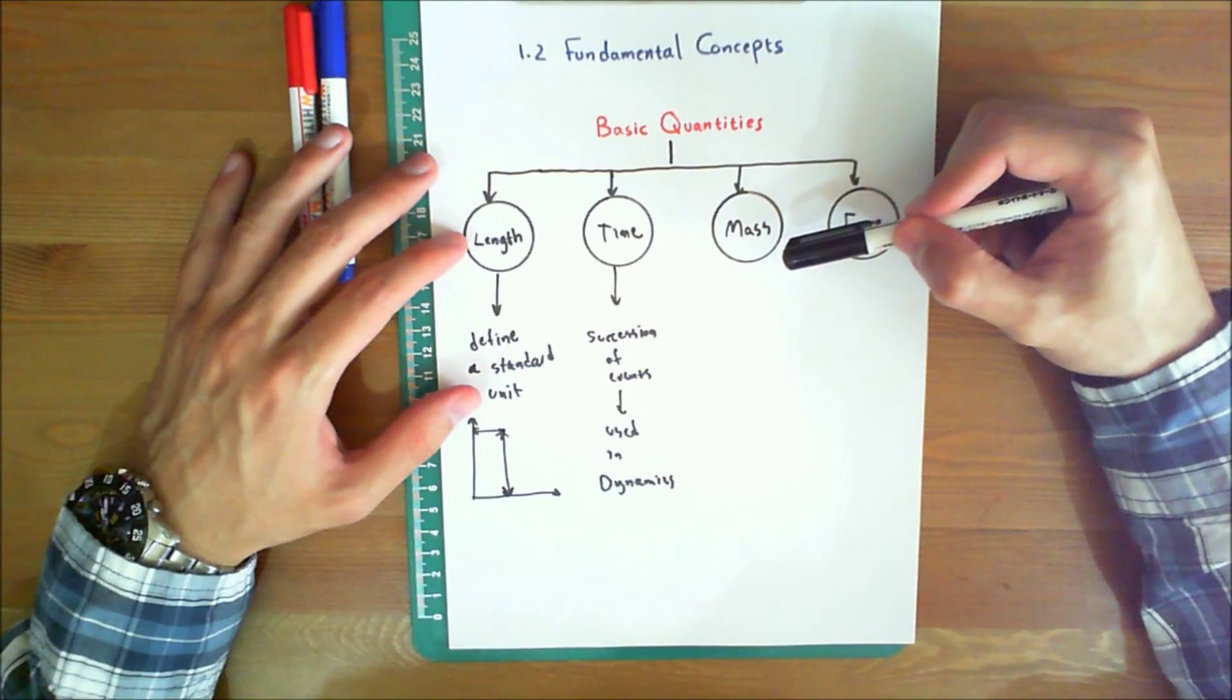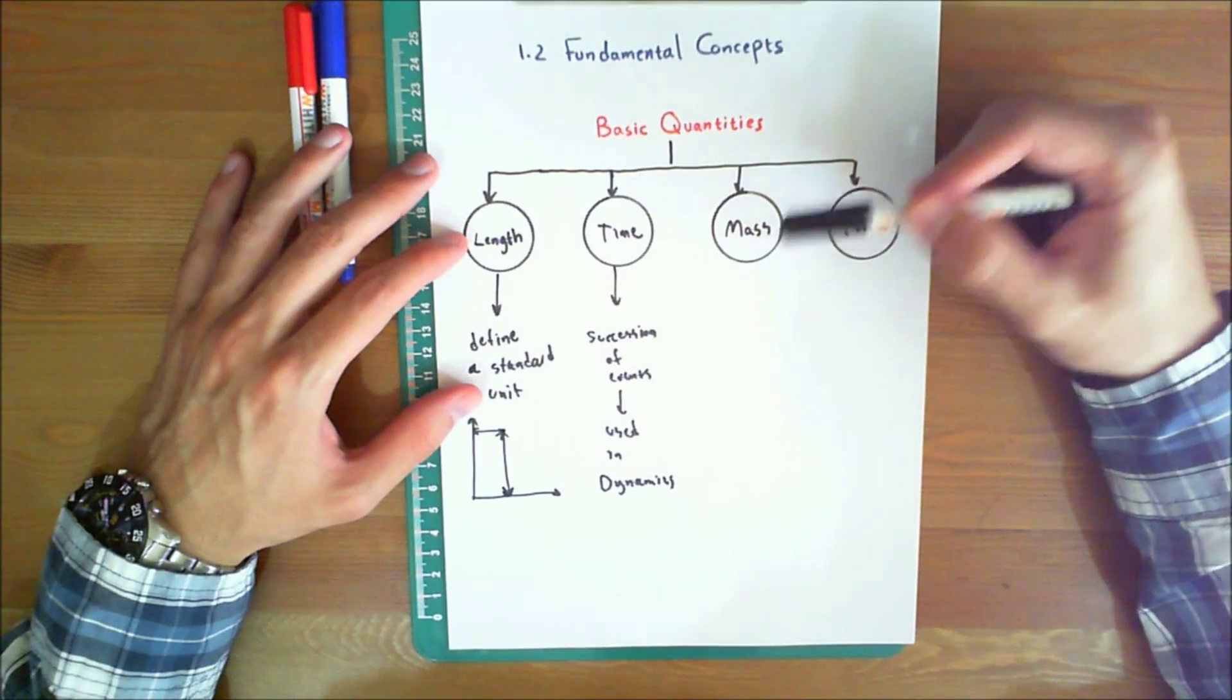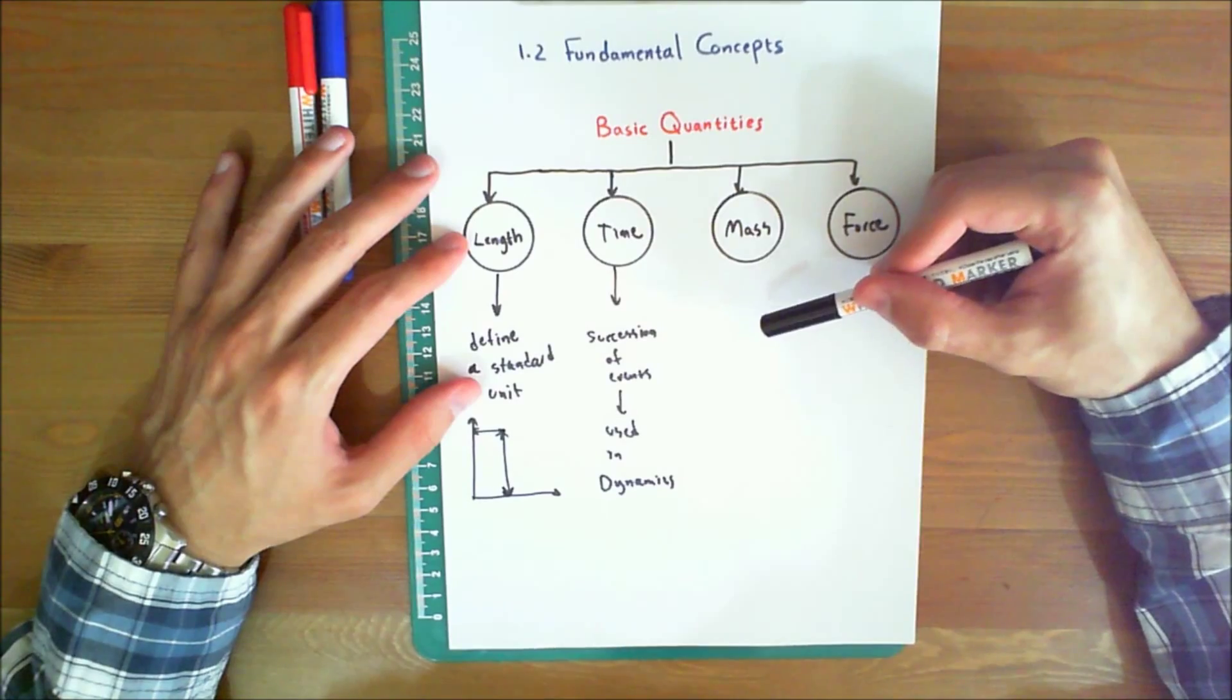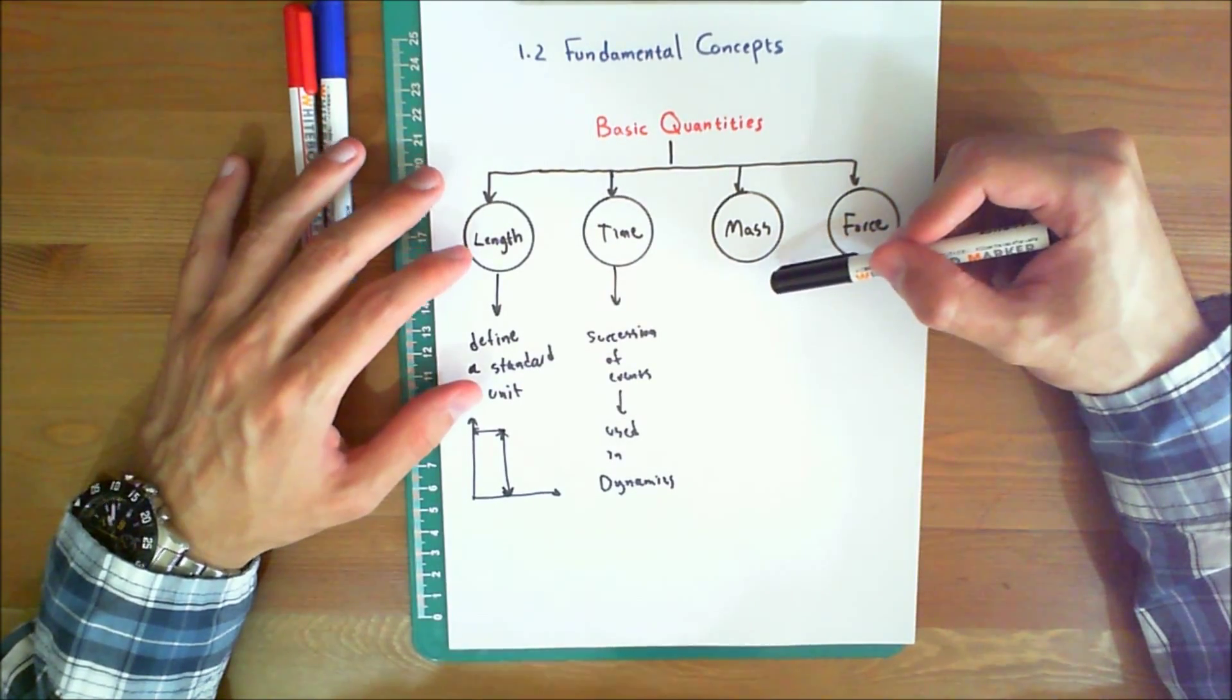Mass. Mass is a property of matter by which we can compare the action of one body with that of another. This property manifests itself as a gravitational attraction between two bodies and provides a quantitative measure of the resistance of matter to a change in velocity.